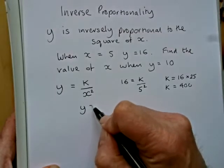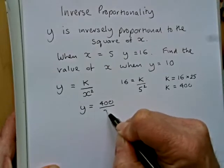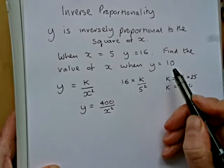So, the relationship then that we're dealing with is y equals 400 over x squared. Now, we've been asked to find the value of x when y is 10.